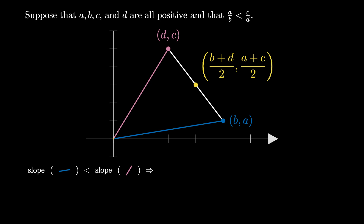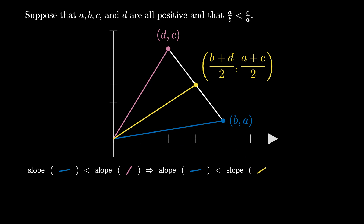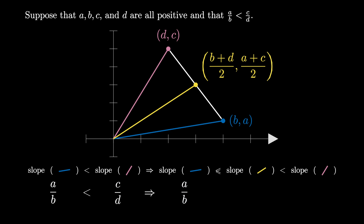The line connecting the origin to this point lies between the first two lines we started with. Therefore, the slope of the line connecting (0, 0) to (B, A) is less than the slope of the line connecting (0, 0) to the midpoint, and that is less than the slope of the line connecting (0, 0) to (D, C). As we've already seen, the slope of the line connecting (0, 0) to (B, A) is A over B, and the slope of the line connecting (0, 0) to (D, C) is C over D. And we can check that the slope of the line connecting (0, 0) to the midpoint is A plus C over B plus D.